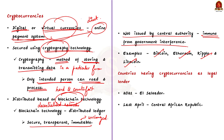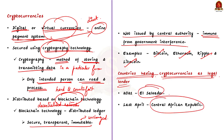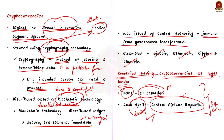As of now, two countries — El Salvador and Central African Republic — have made Bitcoin a legal tender. El Salvador became the first country in the world to introduce Bitcoin as legal tender in the year 2021. Then in last April, the Central African Republic declared Bitcoin as an official currency, becoming the second nation in the world to accept cryptocurrency as legal tender.